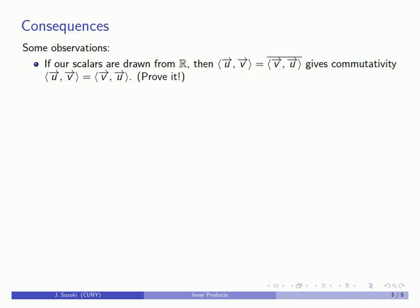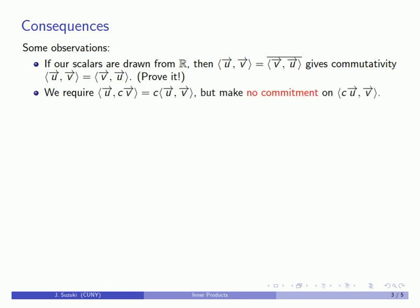Likewise, our requirement that the inner product of u with a scalar multiple of v must be equal to the scalar c times the inner product of u and v does not commit us to anything about the inner product of a scalar multiple of u with the vector v. And likewise, our additivity says nothing about what happens when we add two vectors in the first component.